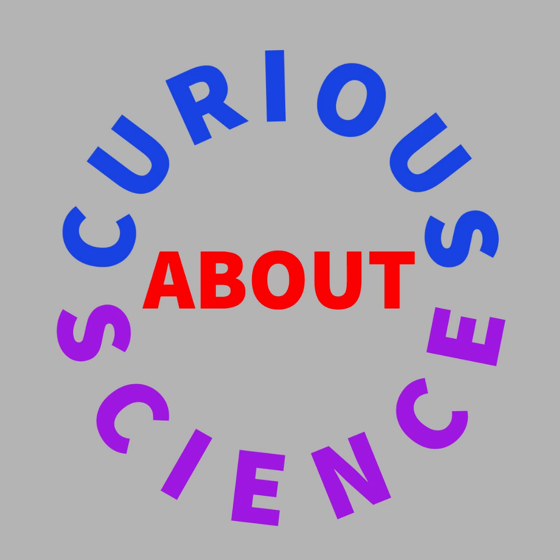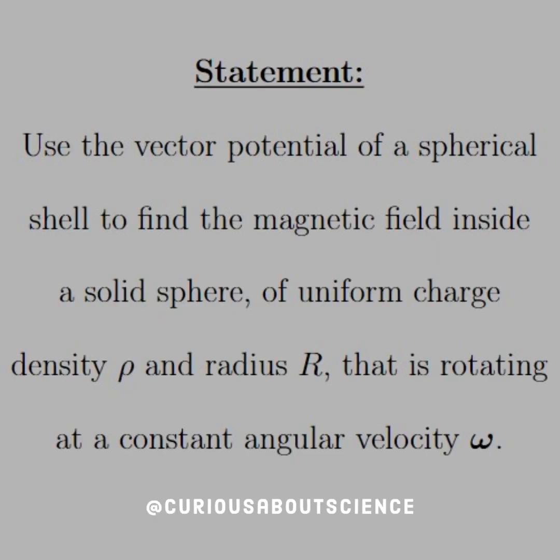Alrighty, time for some more fun. So the statement reads, use the vector potential of a spherical shell to find a magnetic field inside a solid sphere of uniform charge density rho and radius r.